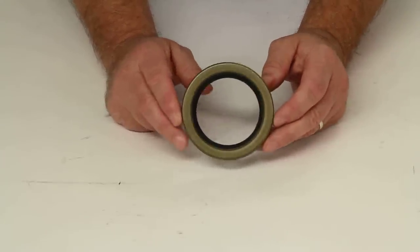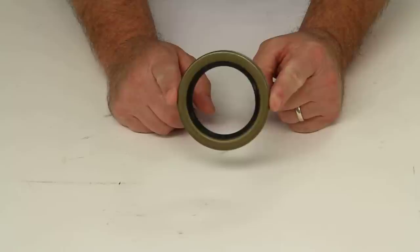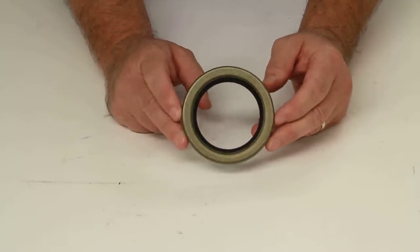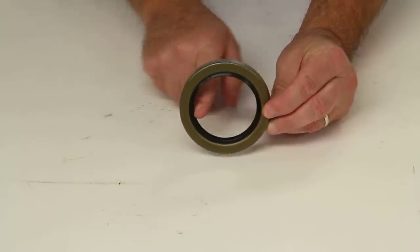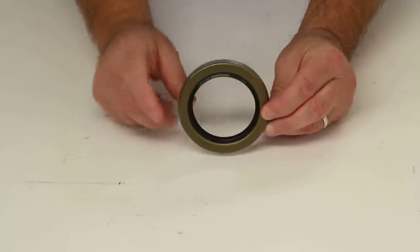Now a few measurements on this. The overall or outer diameter on the seal is 3.376. The inner diameter, which is measured across here, would be 2.375.